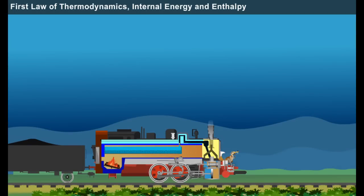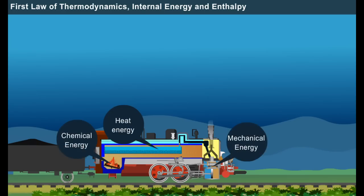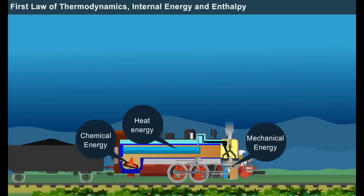From the first law of thermodynamics, that is energy can only be transferred, the chemical energy of a fuel is converted into heat energy, which is then converted into mechanical energy that helps the locomotive steam engine to move.